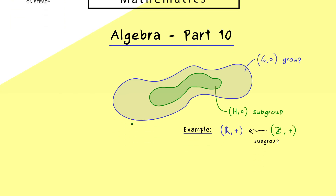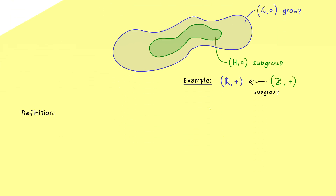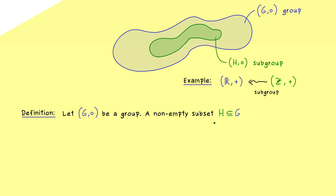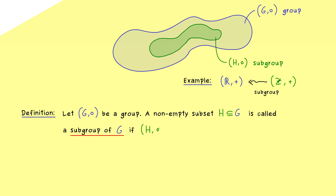Let's write down the definition of a subgroup. We take a fixed group G — a set G with an associative binary operation, an identity element, and all inverses. Then we take a non-empty subset H of G. We give H the special name subgroup of G, but only if H together with the same binary operation forms a group again.